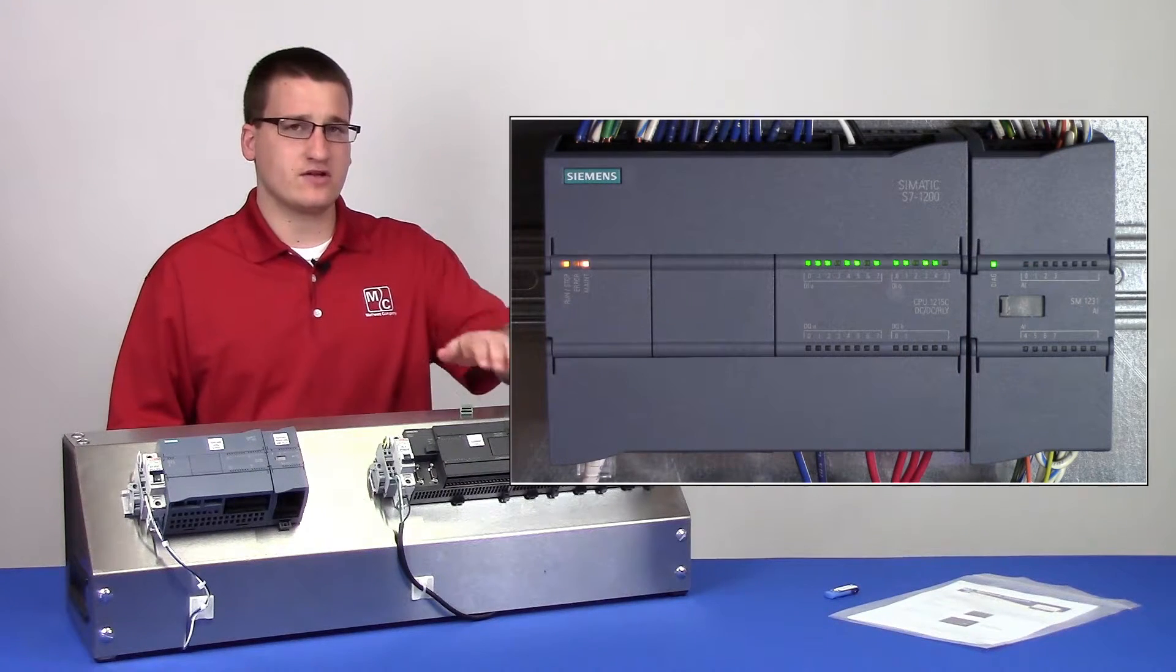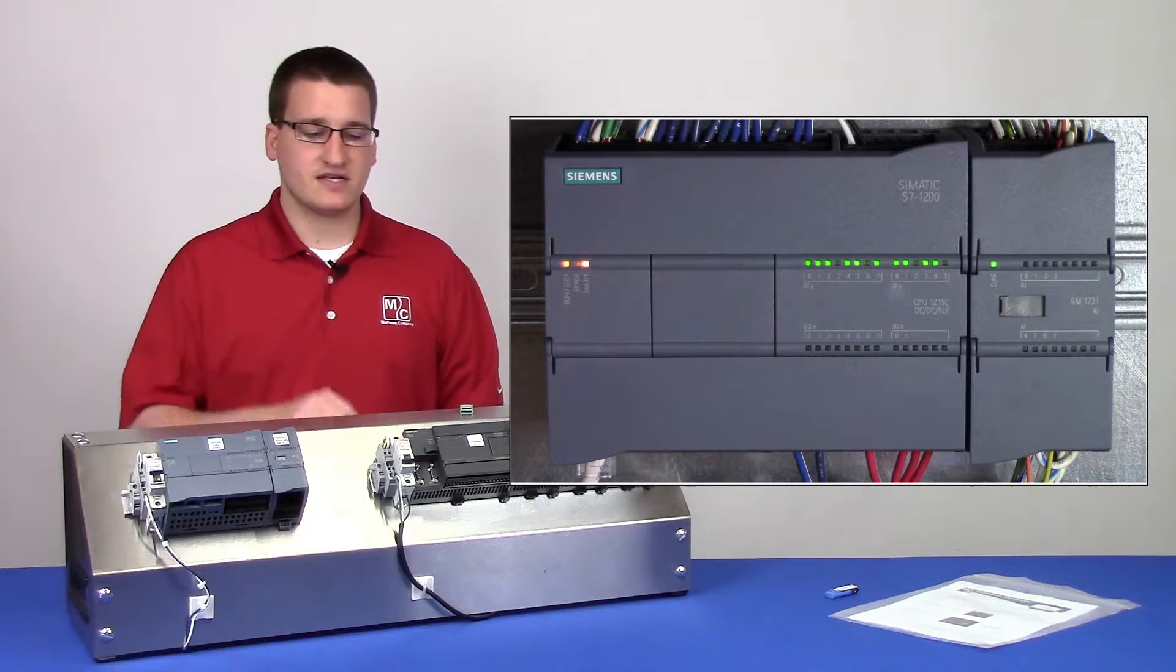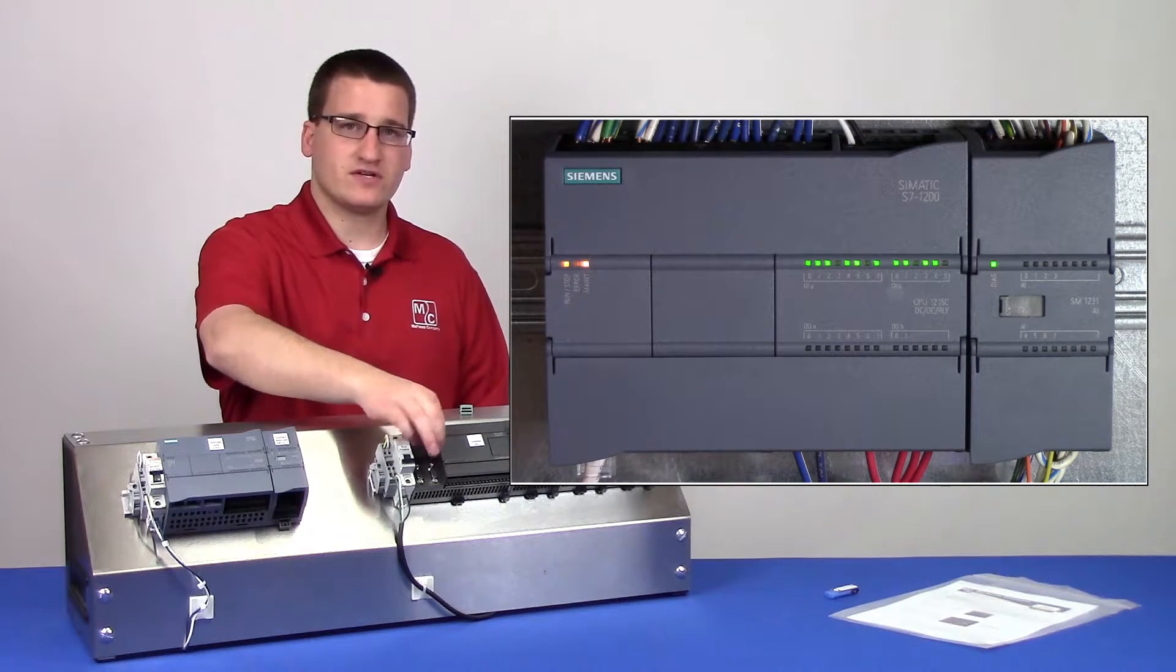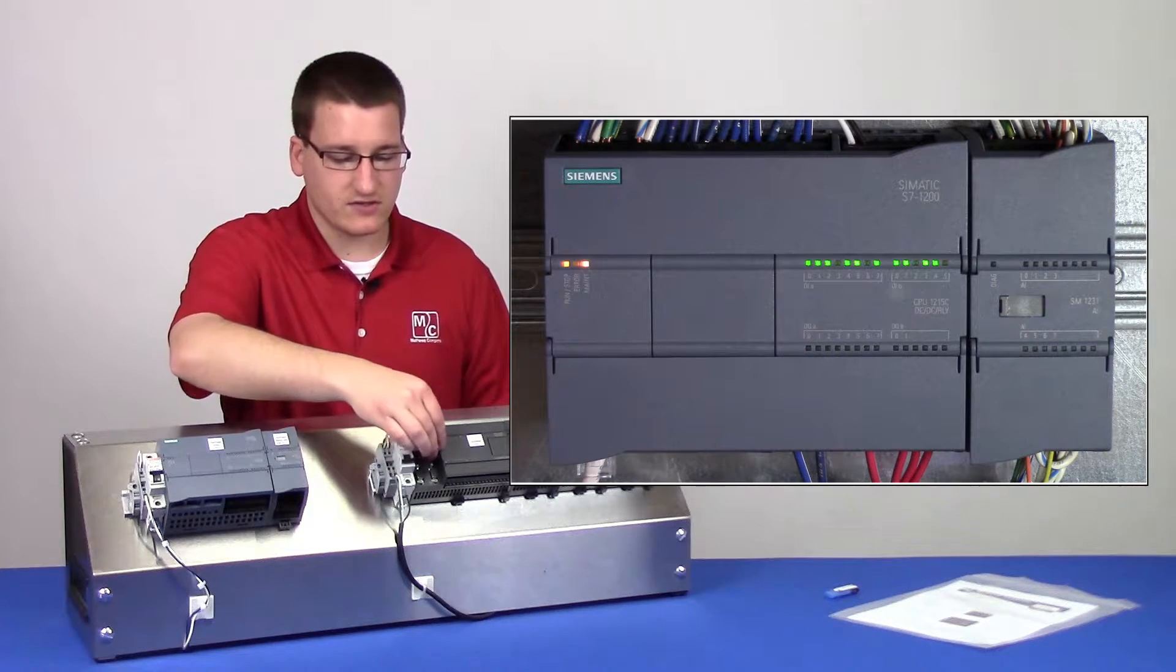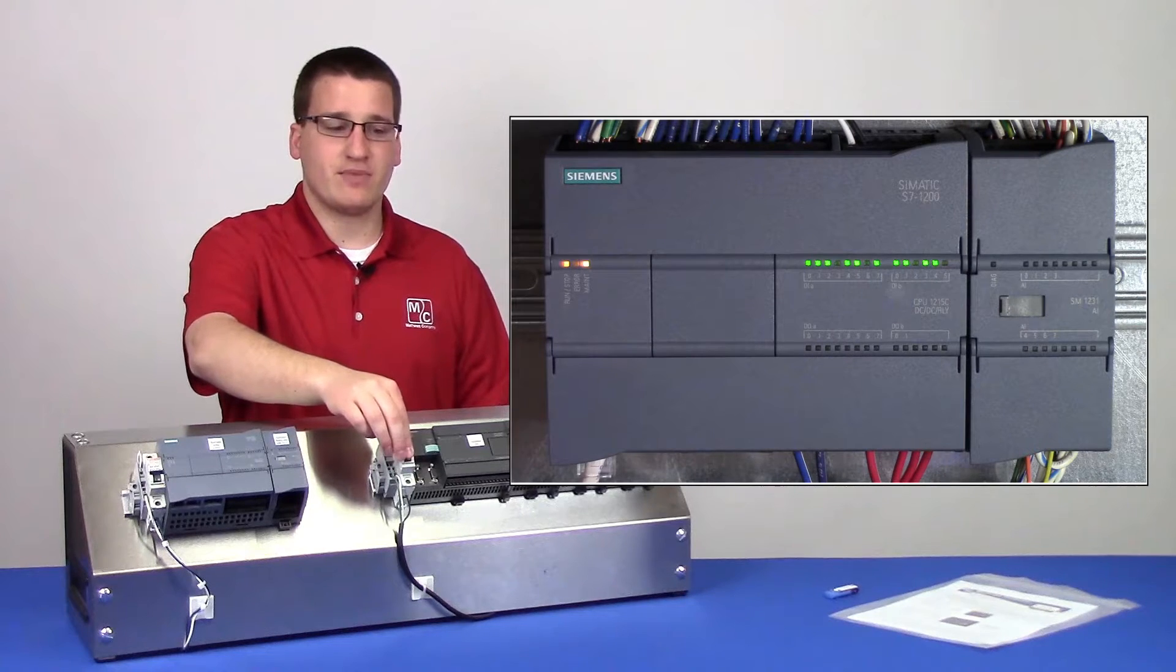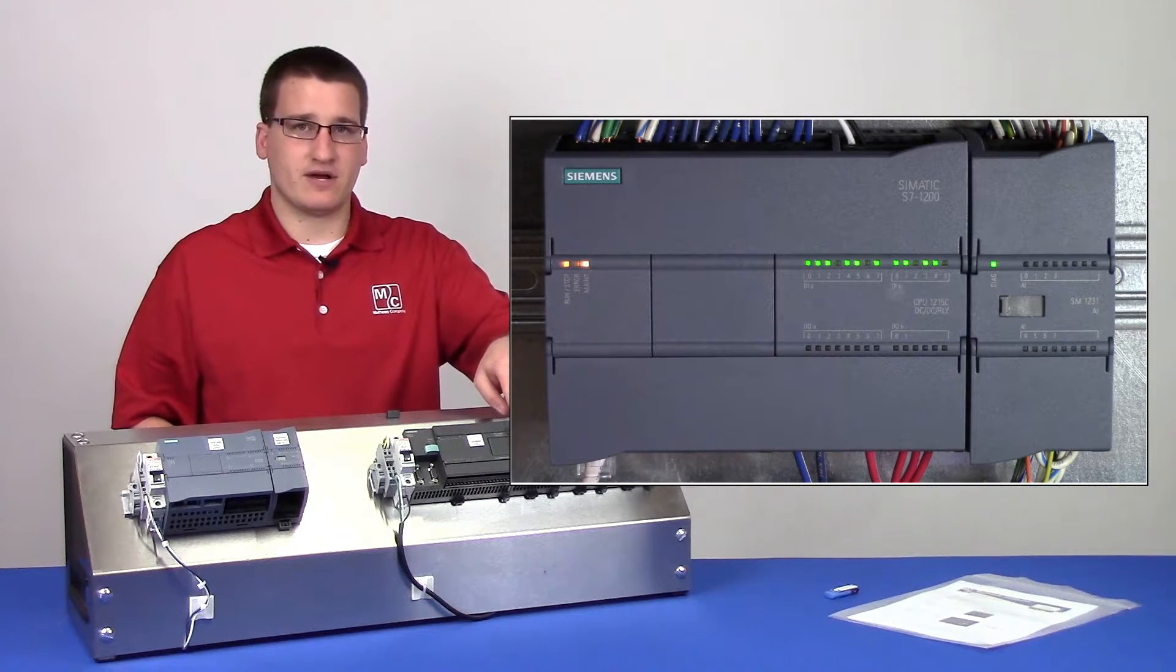While that's going on, let's take a look at what we would do with our S7-200 PLC. In this case, we would remove the black placeholder and insert our green memory chip where the placeholder had been. Then turn on power and look at the run LED on the Ethernet module.